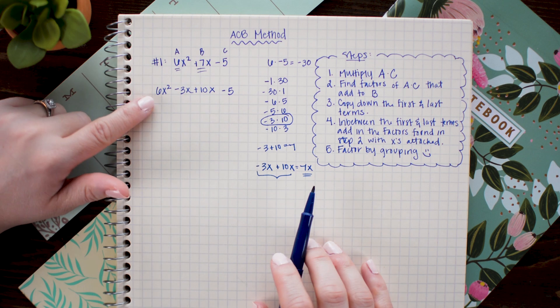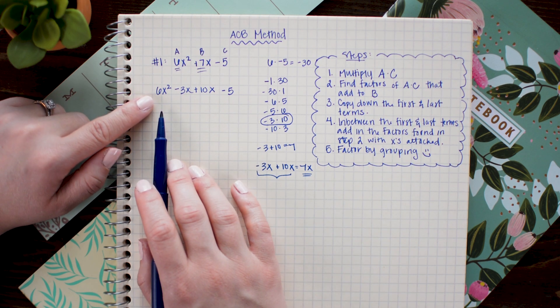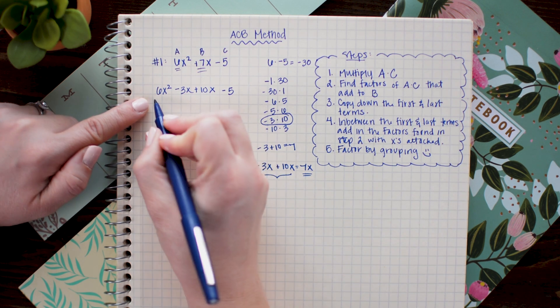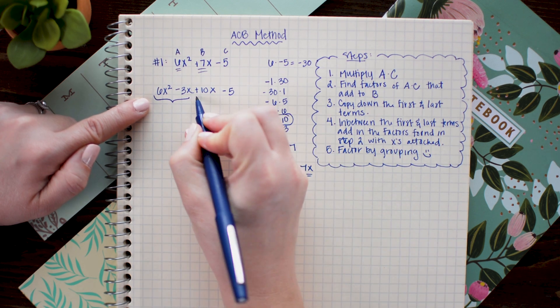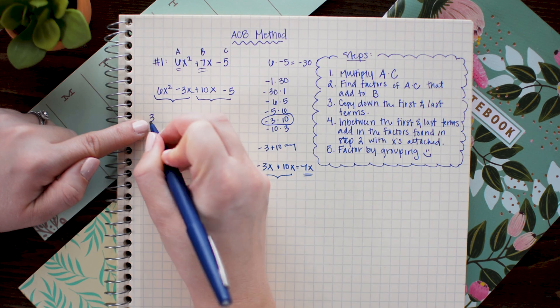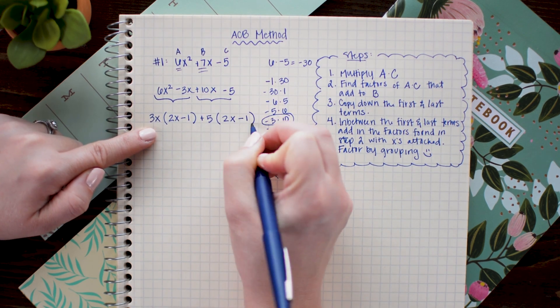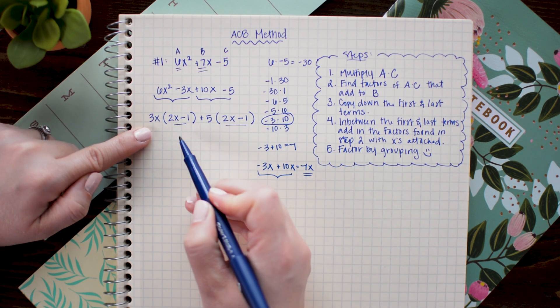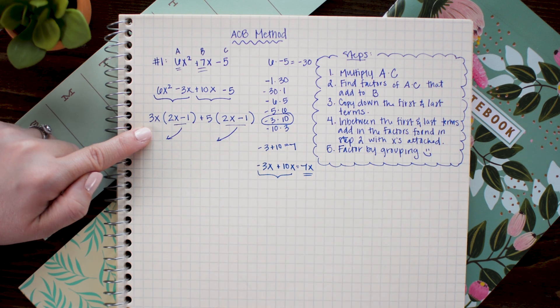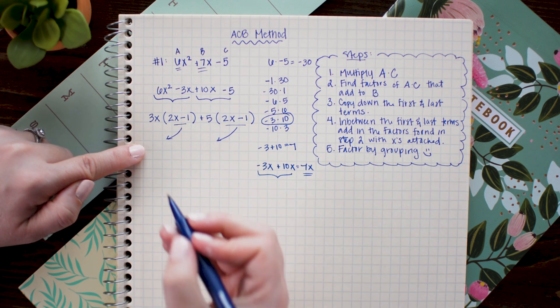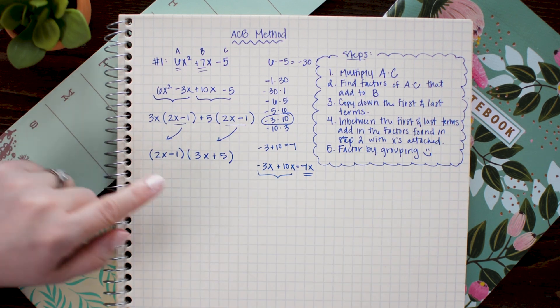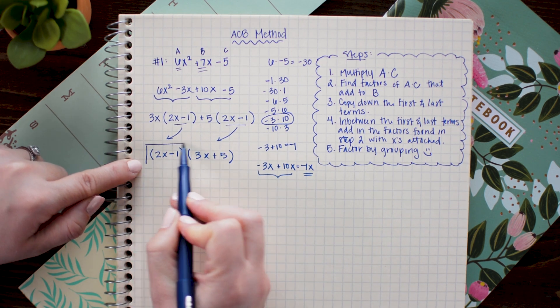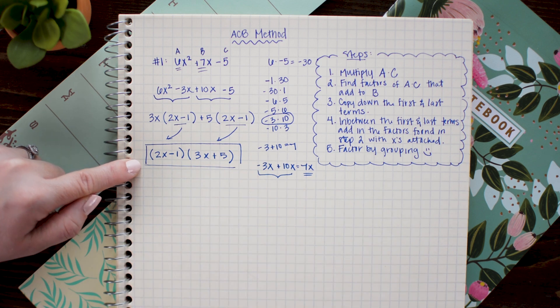And now all we have to do is factor by grouping which I covered in a previous lesson. So if you need a little bit more help with factor by grouping check that out. Otherwise we're just going to group the first two terms together and the second two terms together and pull out their GCFs. Once I've pulled out the GCFs I should have matching binomials left over. And what I'm going to do here is I'm just going to factor out these matching binomials. Again this is part of the factor by grouping process. When I do that I get 3x plus 5 left behind as my second binomial. And there we go we have factored our quadratic into two binomials. Pretty nifty huh?